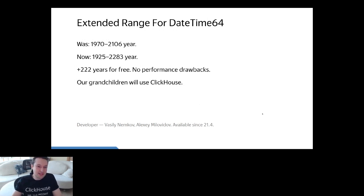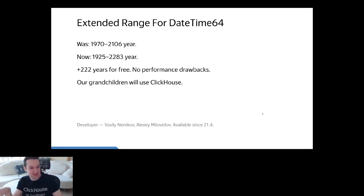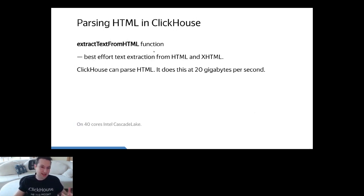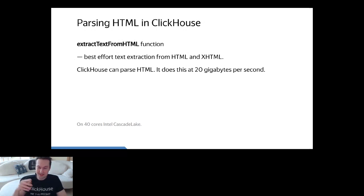ClickHouse can also parse HTML — and it can do it at 20 gigabytes per second. It does not use regular expressions; it uses highly optimized code with SIMD instructions. It is a best-effort function that can process HTML and XHTML. I created a database with about 10 million web pages and can easily search through the text of these pages with a powerful full-scan query at 20 gigabytes per second.